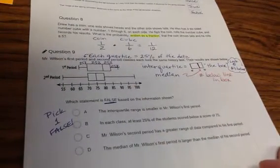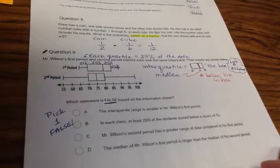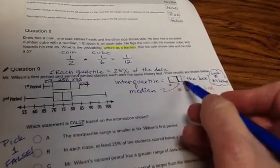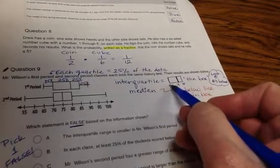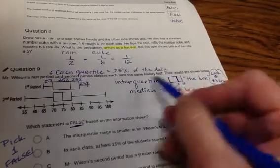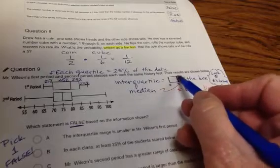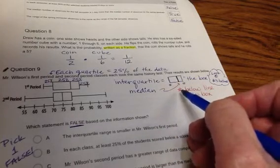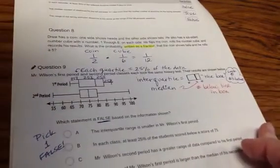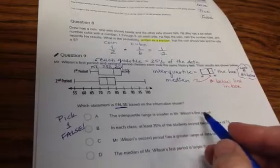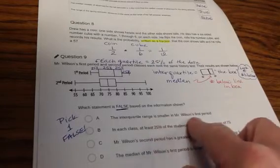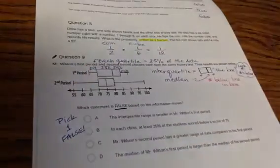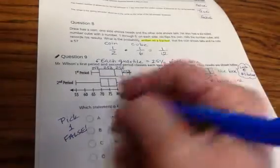Letter A. The interquartile range is smaller in Mr. Wilson's first period. Well, interquartile is represented here. Interquartile means the box. So the number on one edge of the box, just follow down the edge of the box, to the distance to the other end of the box. The median is right where that line happens inside the box. And you can always just look at the number below the line in the box. That's the median. The interquartile range is smaller in Mr. Wilson's first period. We're looking at the box part only, not the parts that stick out. It's this big and the other one's smaller. No, that's false. First period is bigger than second period.